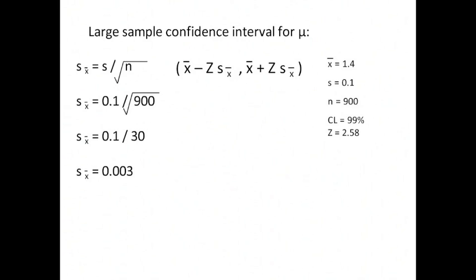Next thing we would do is calculate s of x-bar. s of x-bar is equal to s divided by the square root of n. We plug in s, which is 0.1, and n, which is 900, and we have 0.1 divided by the square root of 900. We would then take the square root of 900, which is 30, and gives us 0.1 divided by 30, so s of x-bar then becomes 0.003.